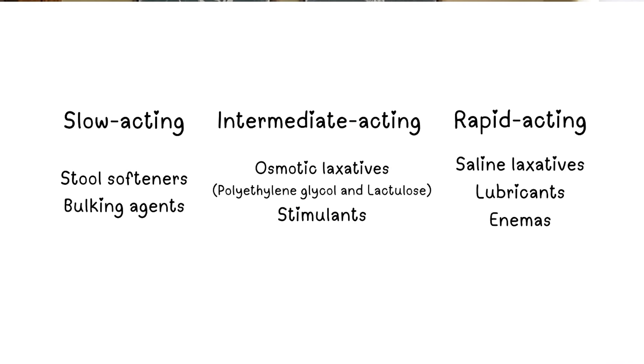Laxatives can be further categorized into fast acting, intermediate, and slow acting. Stool softeners and bulking agents are slow acting. Osmotic laxatives like polyethylene glycol and lactulose, and stimulants like bisacodyl and senna, are intermediate acting. Saline laxatives, lubricants, and enemas are fast acting. They come in pills, powders, liquids and syrups, suppositories, and enemas.